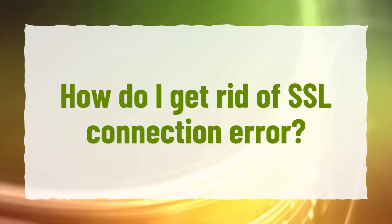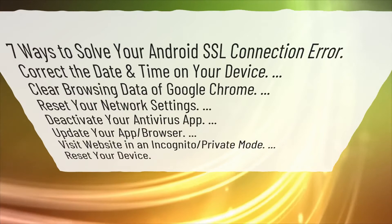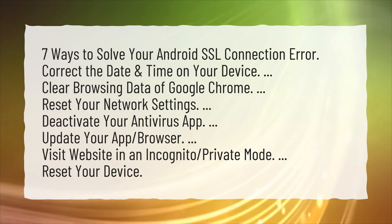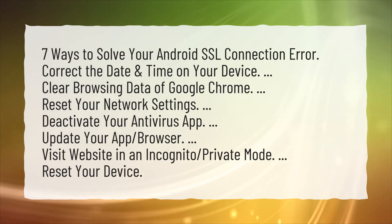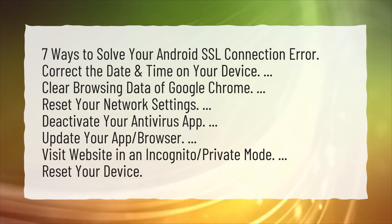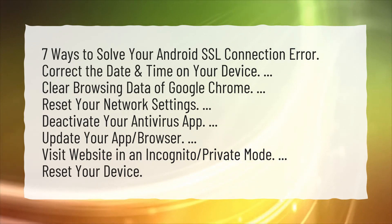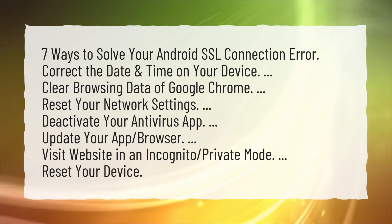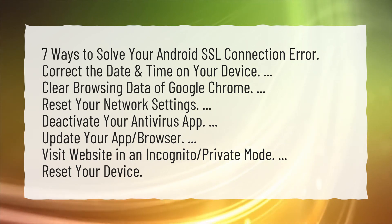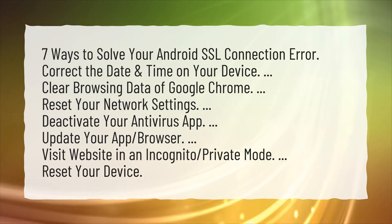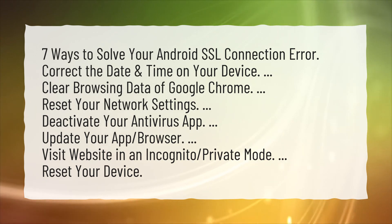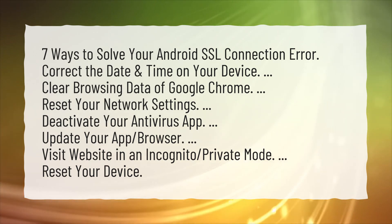How do I get rid of SSL connection error? 7 ways to solve your Android SSL connection error: Correct the date and time on your device. Clear browsing data of Google Chrome. Reset your network settings. Deactivate your antivirus app. Update your app or browser. Visit the website in an incognito or private mode. Reset your device.